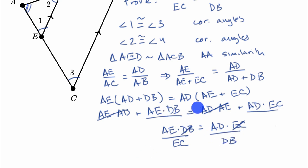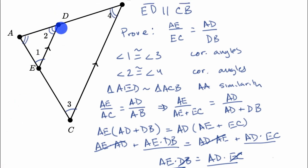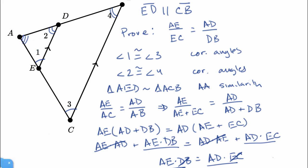Algebraically manipulating what we just had, we get that the length of segment AE over the length of segment EC is equal to the length of segment AD over the length of segment DB — which is exactly what we wanted to prove: that this line, parallel to one side of the triangle, divides the other two sides proportionately.